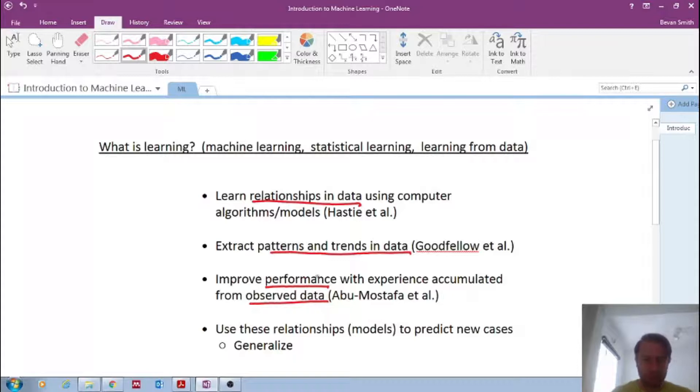So for example here, to improve performance, say now you're given a data set and the data set's very small. It only has a few observed data points and you extract a pattern or a trend, or you develop this relationship in the data to carry out predictions. Then as you increase the number of observed data, the amount of data, then your performance or the algorithm's performance can actually improve with experience by accumulating more and more observed data.